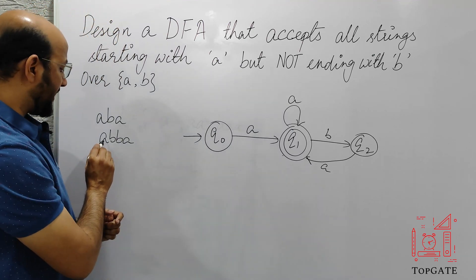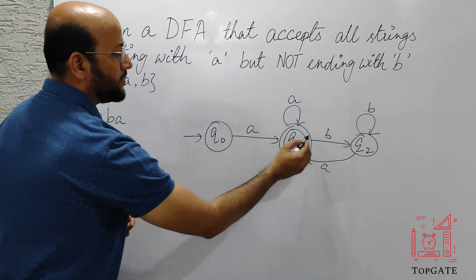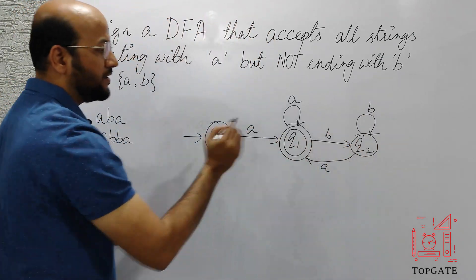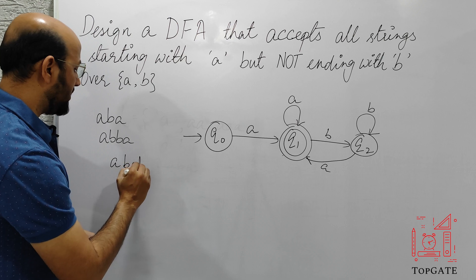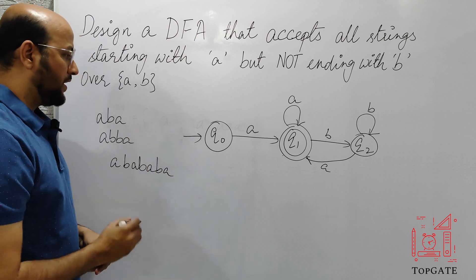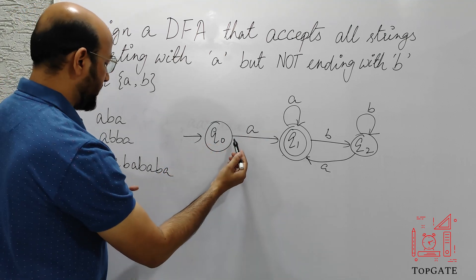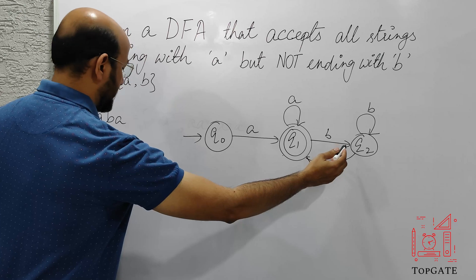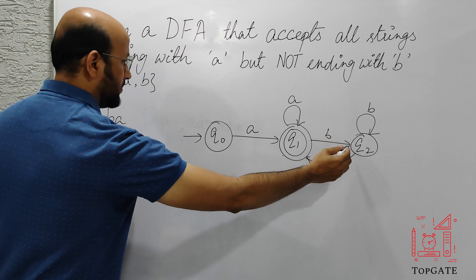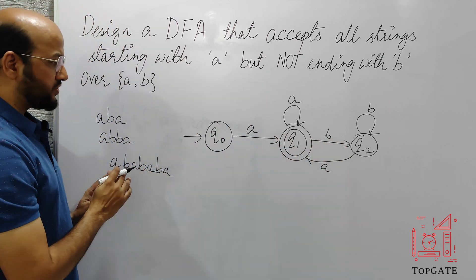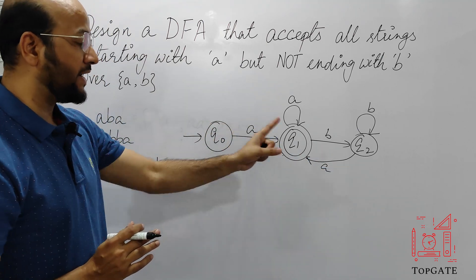Now if we have to generate ABBA, we can add a self-loop of B on Q2. So the DFA can now generate ABBABABAA and so on. Let's verify: A goes to Q1, B goes to Q2, B self-loops on Q2, A goes back to Q1, and so on. It is generating all the strings that start with A and end with A — that is, not ending with B.